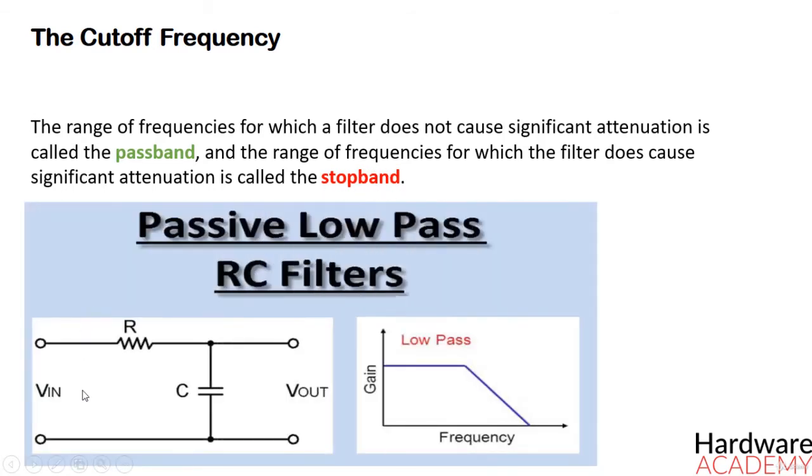Analog filters such as the RC low-pass filter always transition gradually from passband to stopband. This means that it is impossible to identify one frequency at which the filter stops passing signals and starts blocking signals, right?